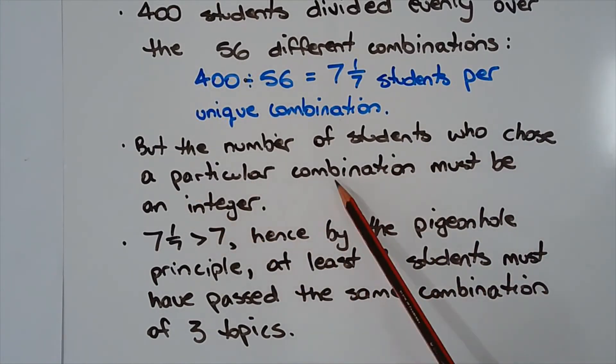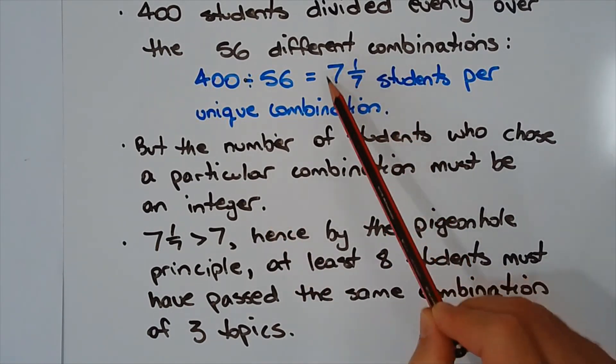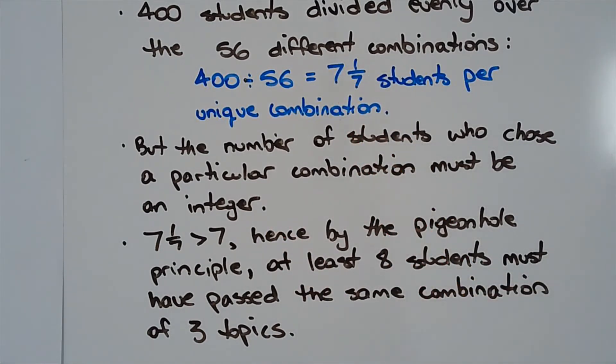But the number of students who chose a particular combination must be an integer. This doesn't make sense since we're talking about a whole number of students. Seven and one over seven is greater than seven. Hence, by the pigeonhole principle, at least eight students must have passed the same combination of three topics.